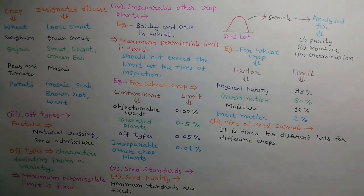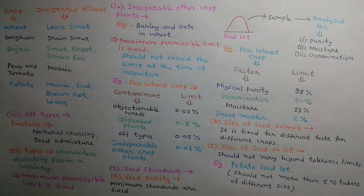Size of seed samples for different tests for different crops have been prescribed. The seed lots are graded on the basis of the size of seeds, so the seed size in seed lot should not vary beyond tolerance limits. For example, a seed lot of potato should not contain more than 5% tubers of different size.